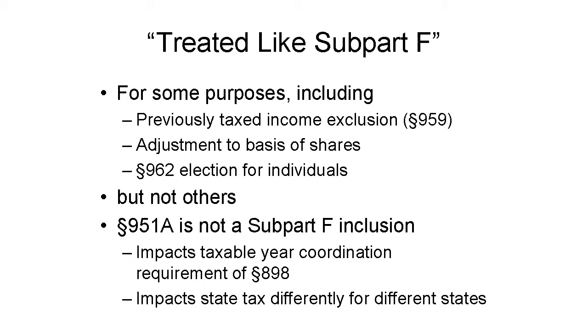Section 951 Cap A inclusions are not subpart F inclusions. They don't have the same limitations and are in addition to subpart F inclusions. However, for some purposes, they are treated like subpart F income. These purposes include computing amounts considered previously taxed and thus excluded under Section 959, for the 962 election, and for estimated tax payments. There are a few other items, and the law and proposed regulations have a list of the very few code sections affected.